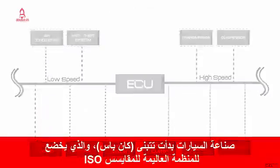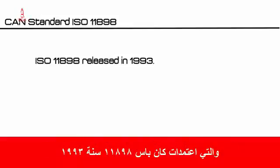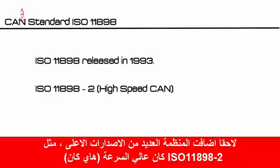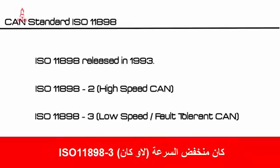As the automotive industry started to adopt CAN, ISO released the CAN standard ISO 11898 in 1993. Later on, ISO added several higher versions, for example ISO 11898-2 and ISO 11898-3.